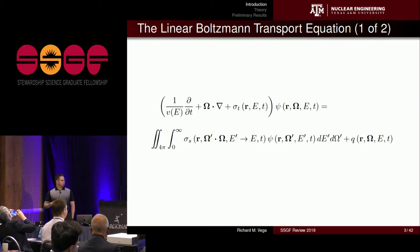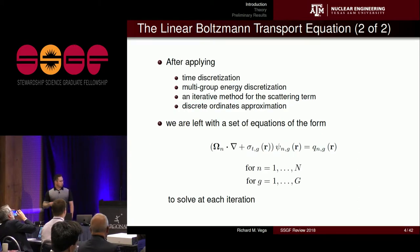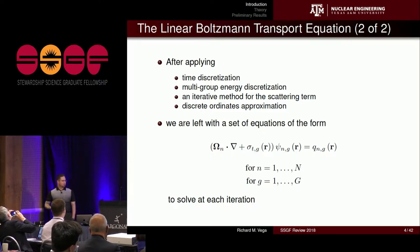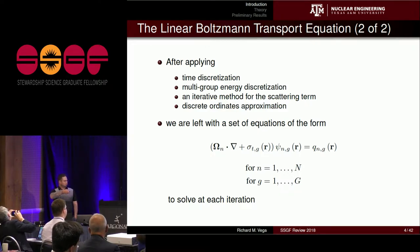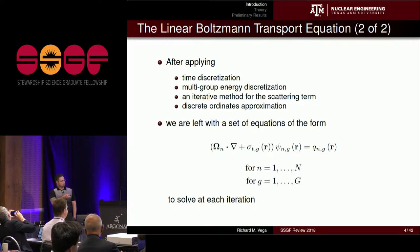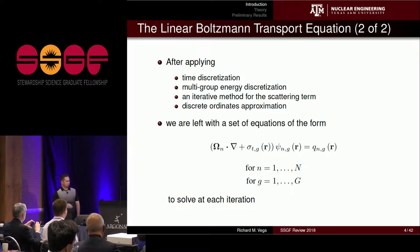Fortunately, this scary equation can be brought down significantly after applying time discretization, the multigroup energy discretization, an iterative method for the scattering term, and the discrete ordinates approximation. After applying all of those things — each of which could be the subject of many dissertations — we're left with a spatially dependent partial differential equation. We have the streaming plus collision operator acting on the angular flux, equaling some steady-state source, and we iteratively solve this for N angles and G energy groups.